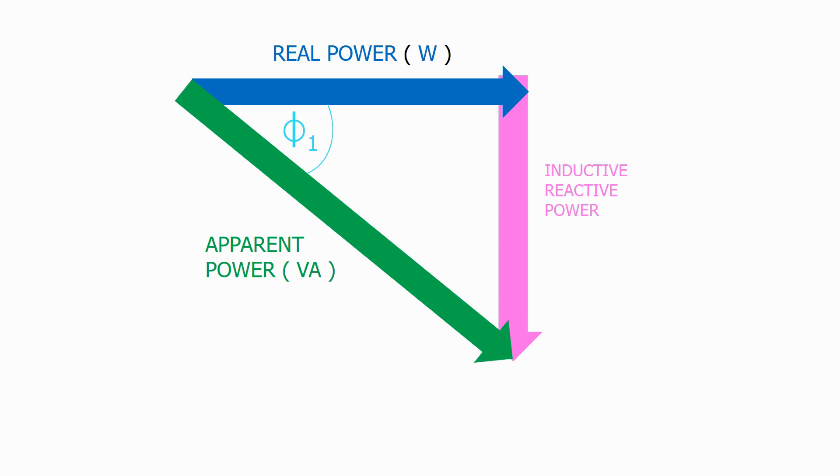We now decide what power factor we want the network to improve to. We call this phi2 and then calculate what value of capacitive reactive power we need to supply to achieve this new power factor.